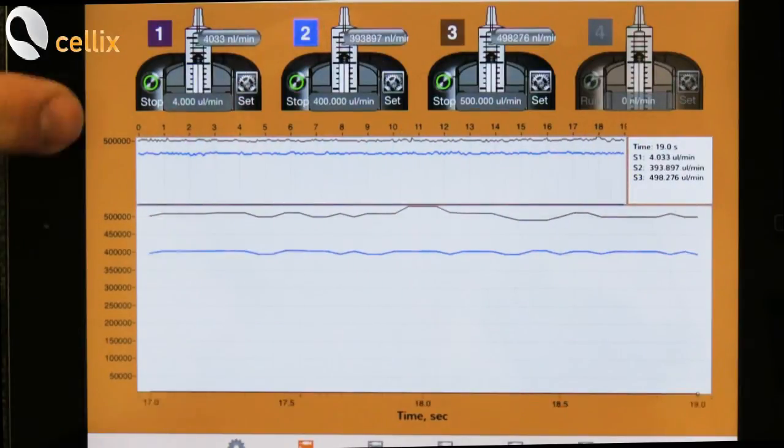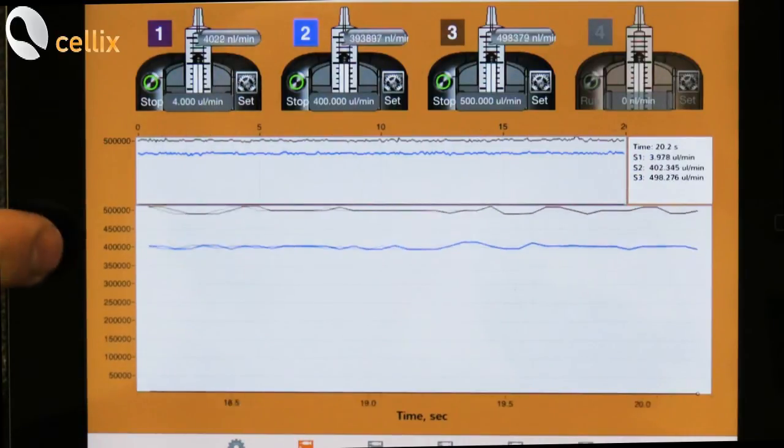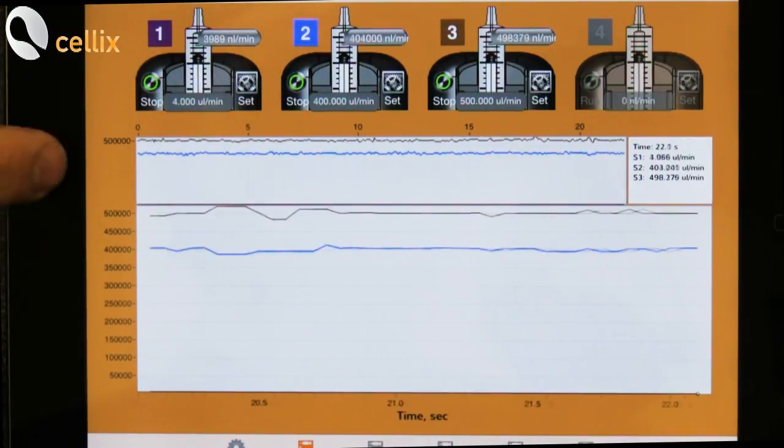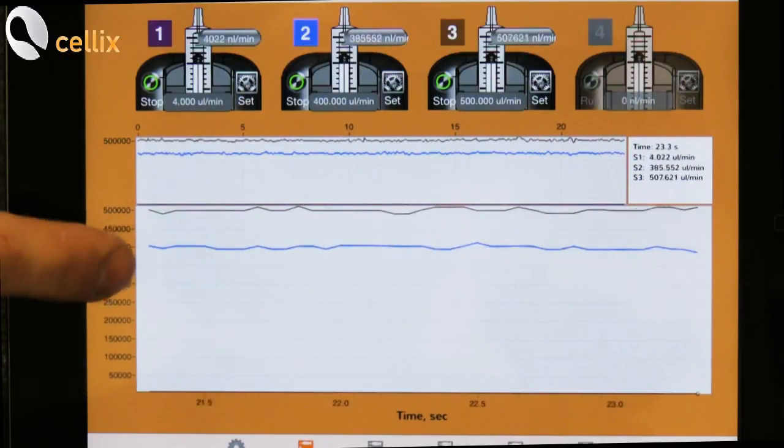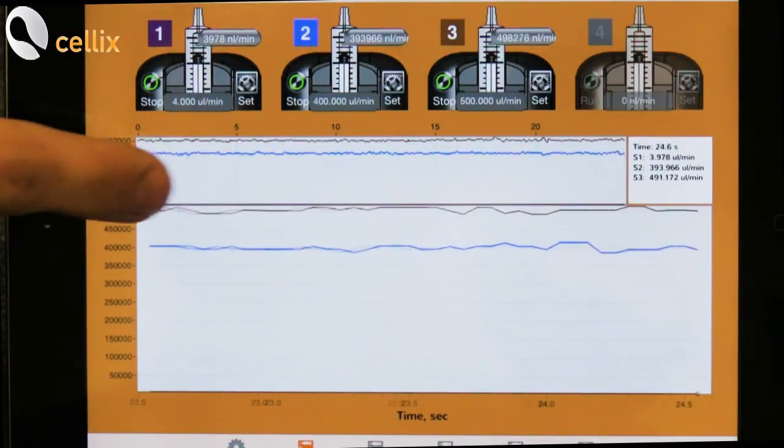If we have a look at the app, we can see that the two Unico pumps are perfusing at a very high rate, in this case between 400 and 500 microliters.